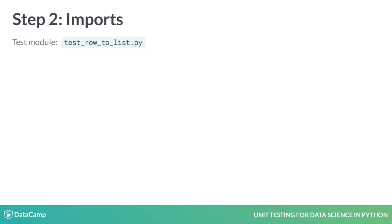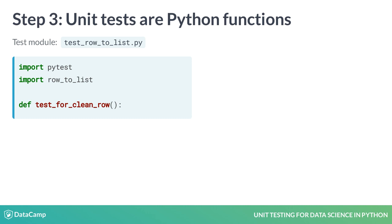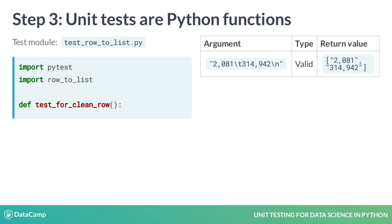In the test module, we first import PyTest, then we import the function under test. A unit test is written as a Python function whose name starts with test underscore, just like the test module. This way, PyTest can tell that it is a unit test and not an ordinary function. The unit test usually corresponds to exactly one entry in the argument and return value table for RowToList. This particular argument is a clean row, so we call the unit test testForCleanRow.